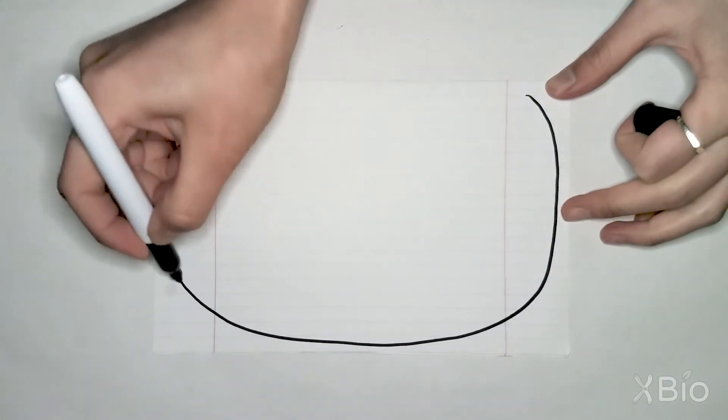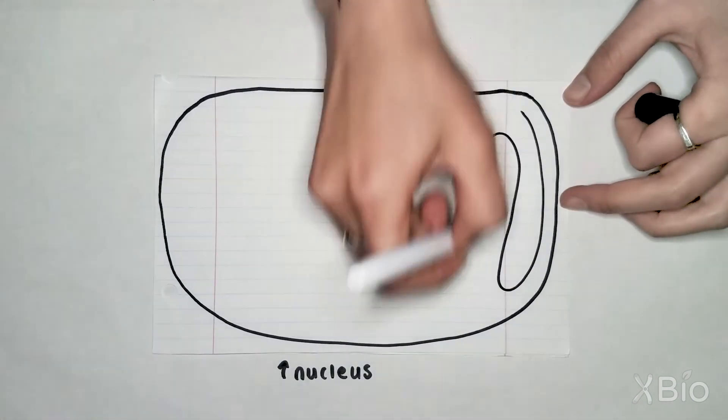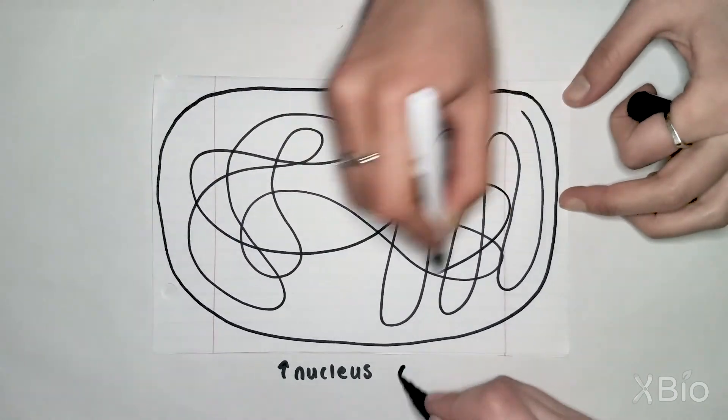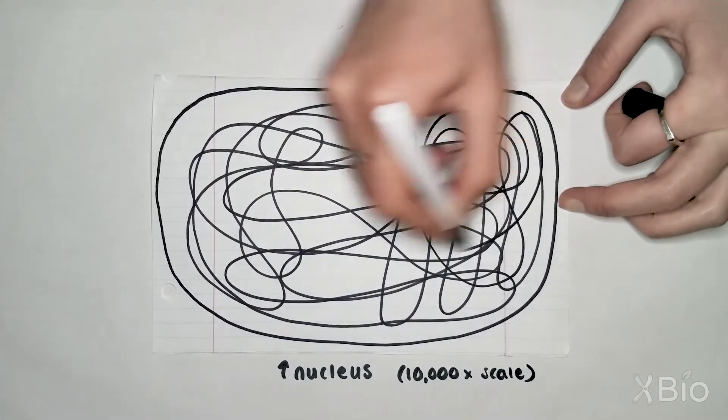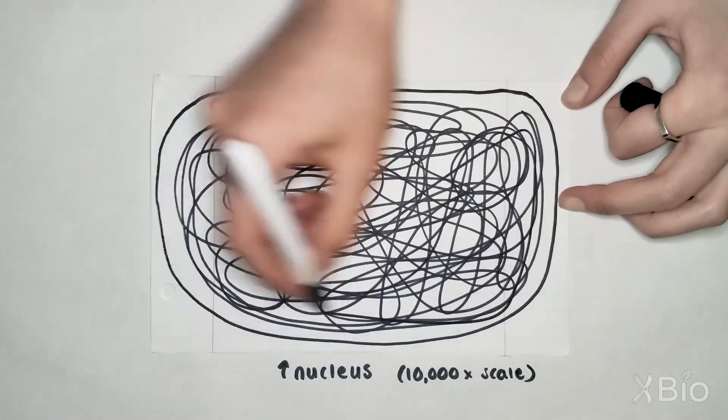In animals, fungi, and plants, DNA is stored in a membrane structure called the nucleus. If we blow up a nucleus 10,000 times its size, then it would fit half the width of this paper. On this scale, your DNA in total would be 20 kilometers long and would have to fit into this space without getting tangled.